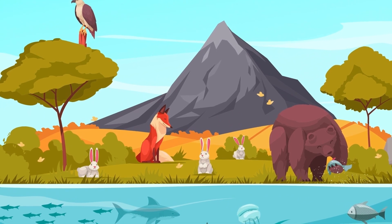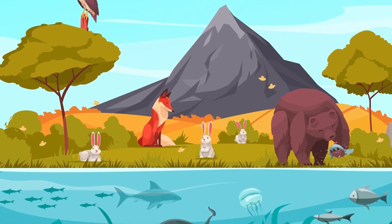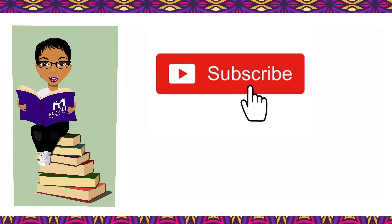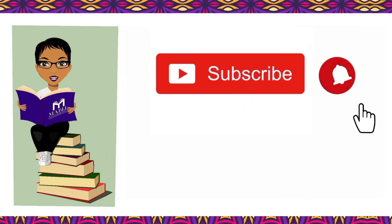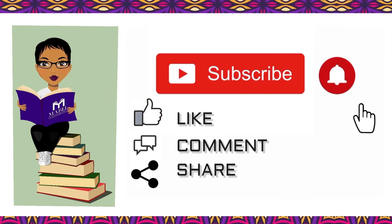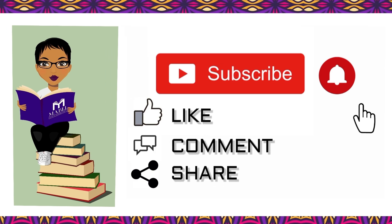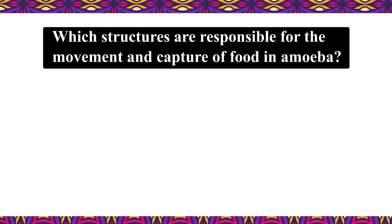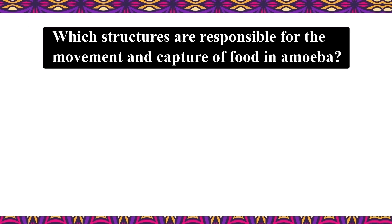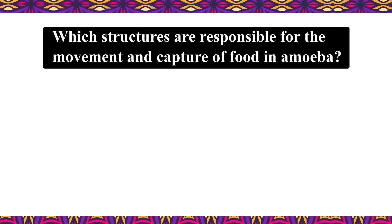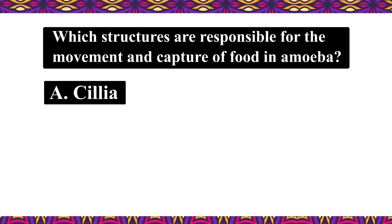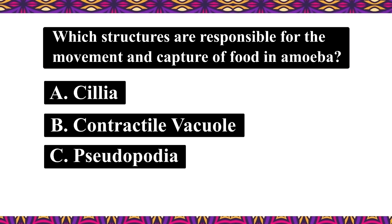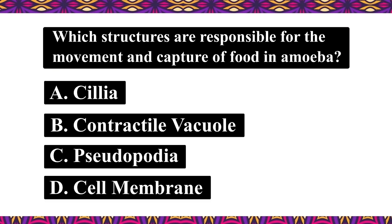The process of breathing in amoeba is done through the cell membrane. Amoebas are found in terrestrial as well as aquatic habitats. Pop Quiz Question: Which structures are responsible for the movement and capture of food in amoeba? A. Cilia. B. Contractile vacuole. C. Pseudopodia. D. Cell membrane.